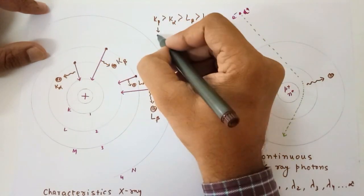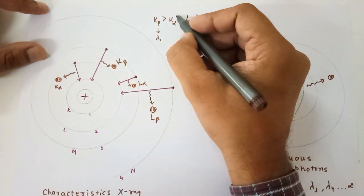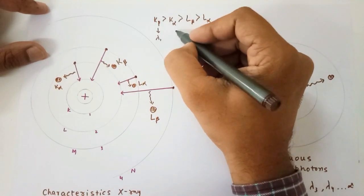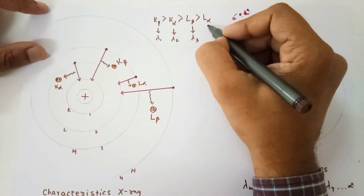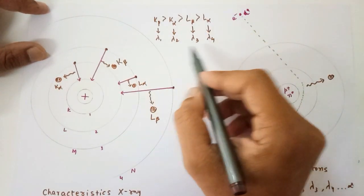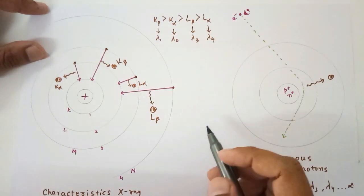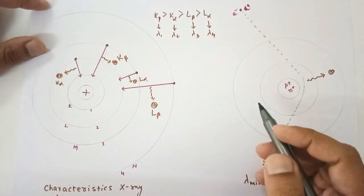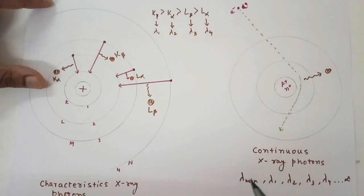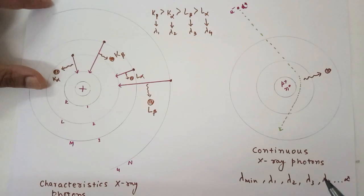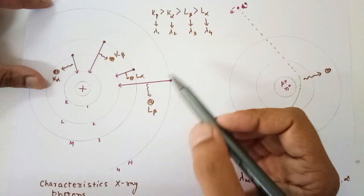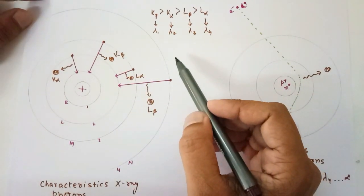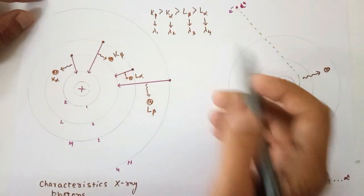Let us assume K-beta has wavelength lambda 1, K-alpha has wavelength lambda 2, L-beta has wavelength lambda 3, and L-alpha has wavelength lambda 4. These wavelengths lambda 1, lambda 2, lambda 3, and lambda 4 were already present in the continuous X-ray spectrum, but now we additionally have more photons corresponding to these wavelengths due to the characteristic X-rays.